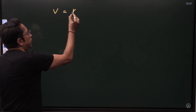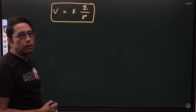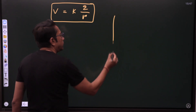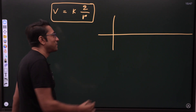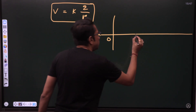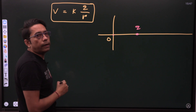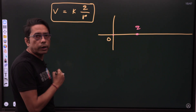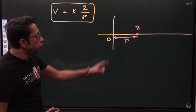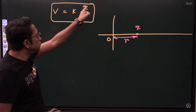Say voltage is given by a constant K into charge Q divided by distance R. This is the voltage formula — potential — which we will study in class 12. Suppose at the origin O there is a charge Q at distance R. The potential at O due to this charge is K times Q divided by R.